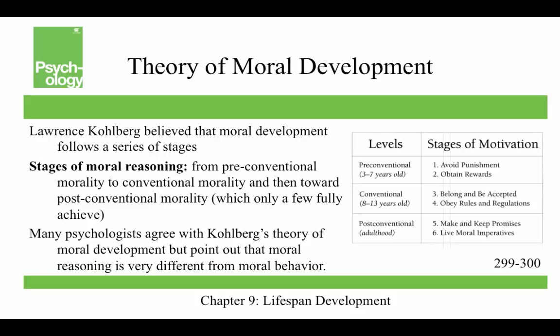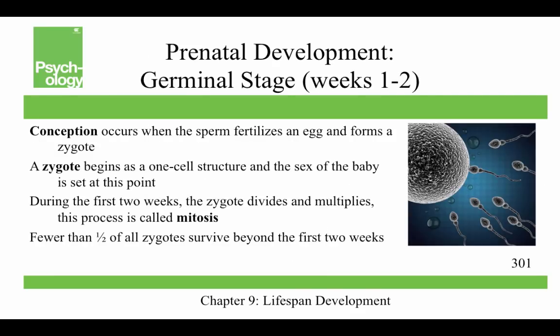Kohlberg believed that moral development followed a series of stages. He would give people moral dilemmas — for example, is it okay to steal in order to buy medicine to save a dying child or spouse? He found stages of moral reasoning from pre-conventional morality to conventional morality and then toward post-conventional morality, which only a few people fully achieve. Many psychologists agreed but point out there's a huge difference between moral reasoning and moral behavior.